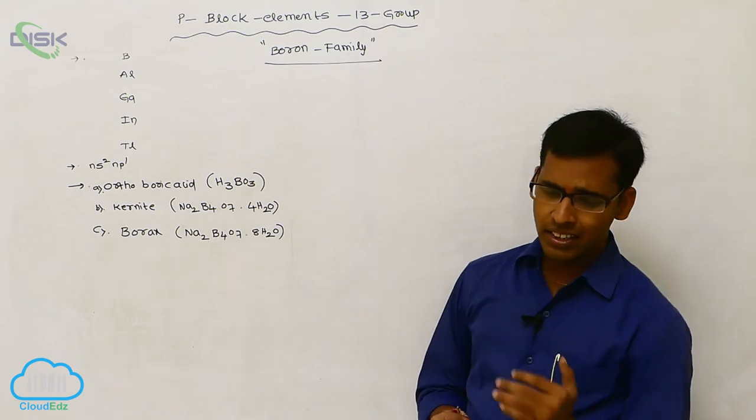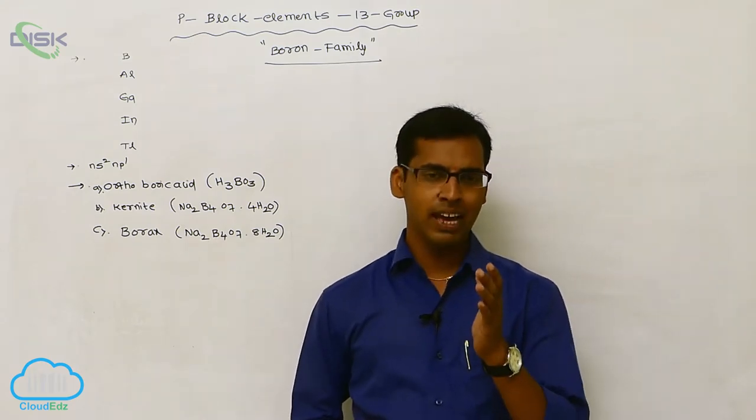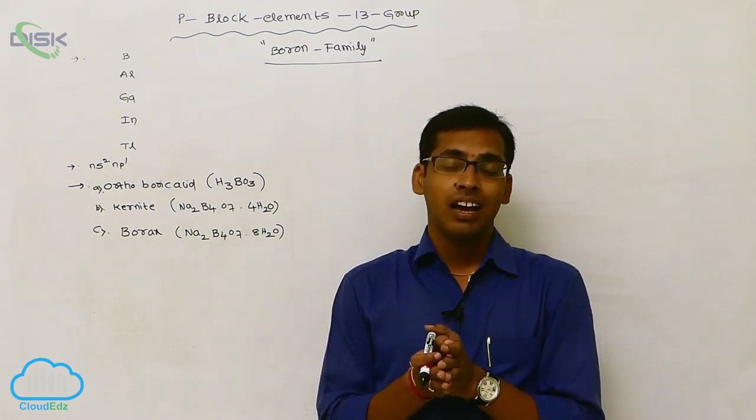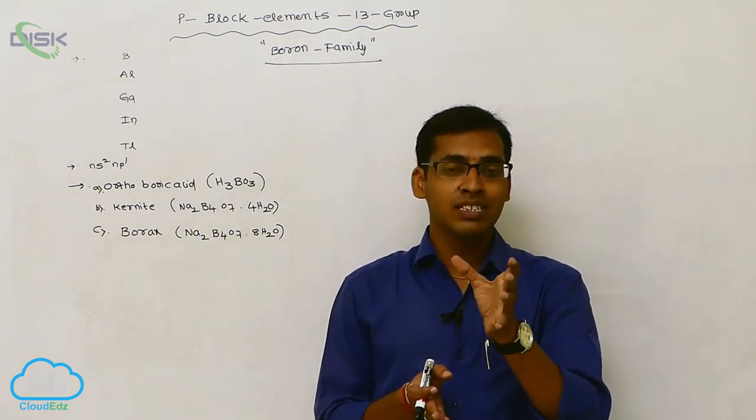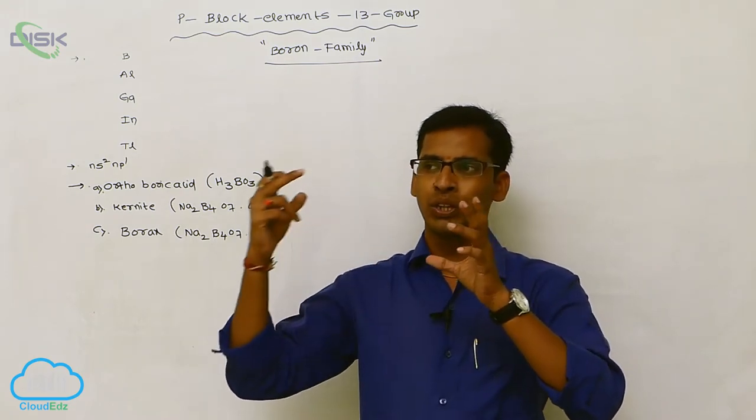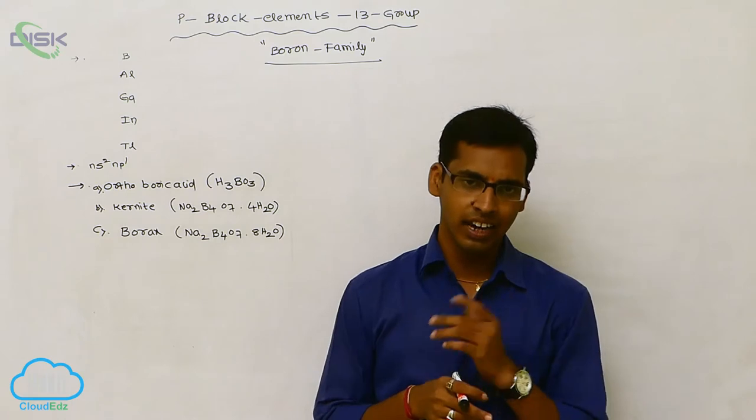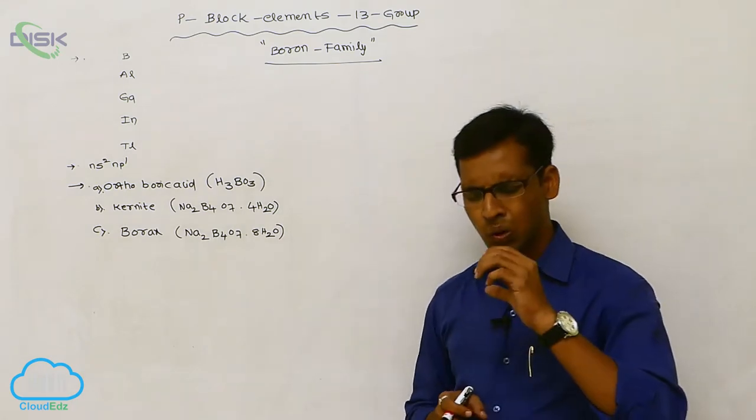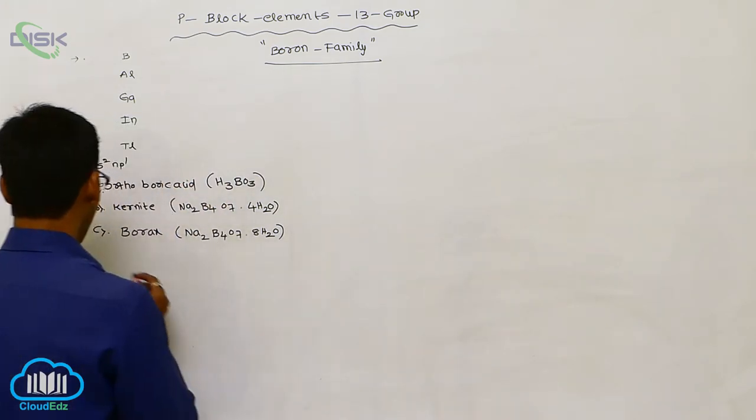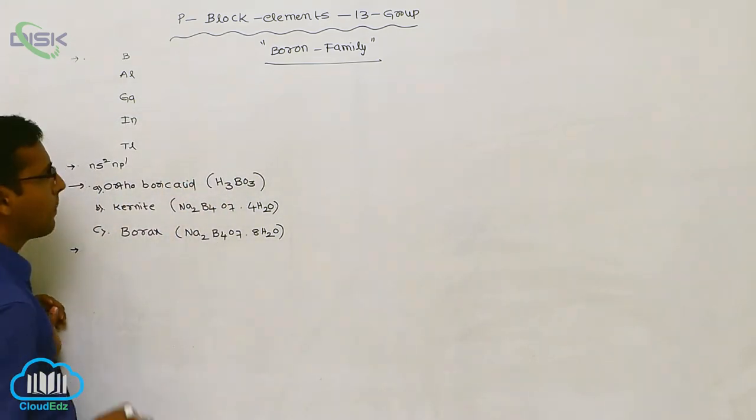And next one. These 13th A group elements, especially P block elements, are exhibited various physical properties. But all the chemical and physical properties are very similar character compared in 13th, 14th, 15th, 16th, 17th, 18th group elements. So very close properties are observed. So now we discuss properties.